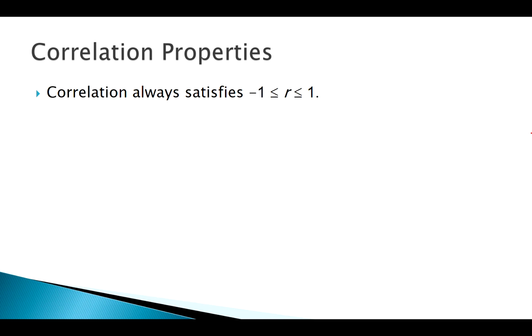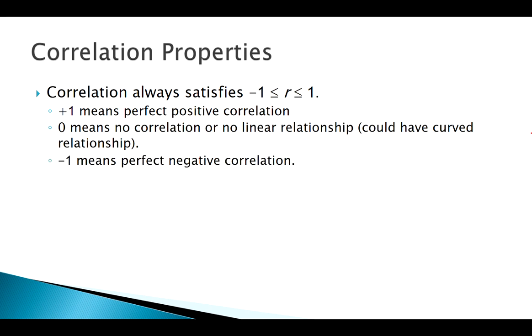So R is always going to be a number between negative 1 and 1. Positive 1 means a perfect positive correlation. 0 means nothing going on there, or no linear. Negative 1 means a perfect negative correlation. So the further away that I get from 0 with R, the stronger the correlation is, the further I get to those endpoints.